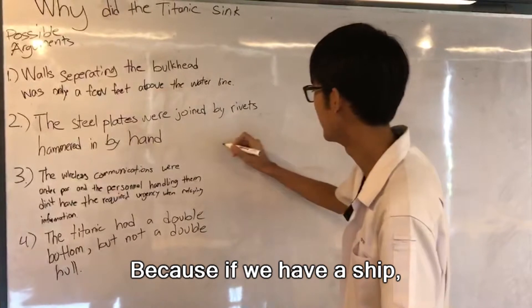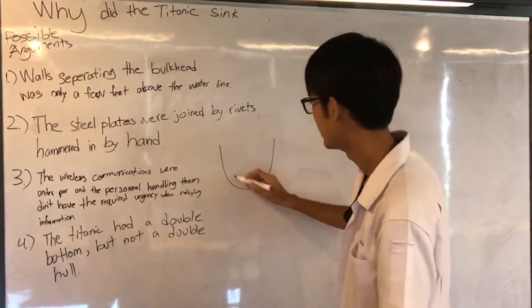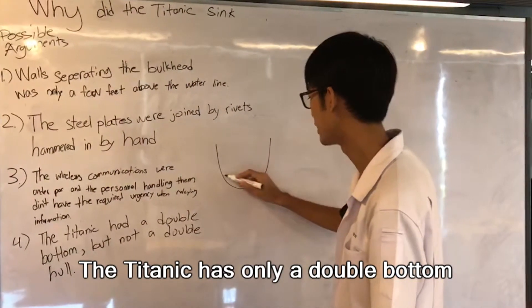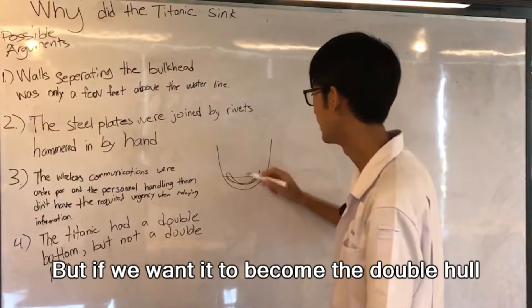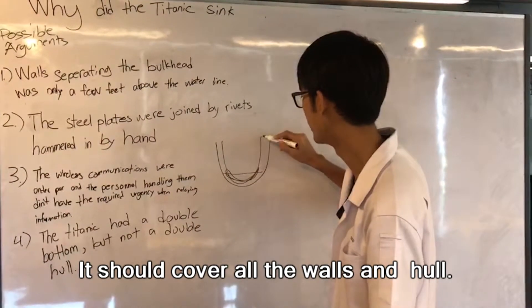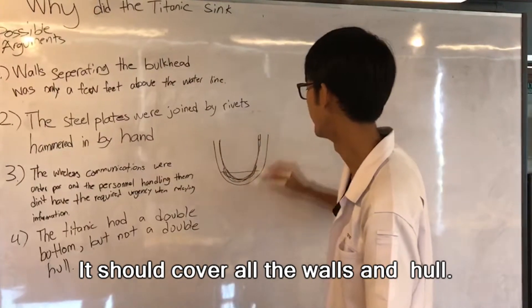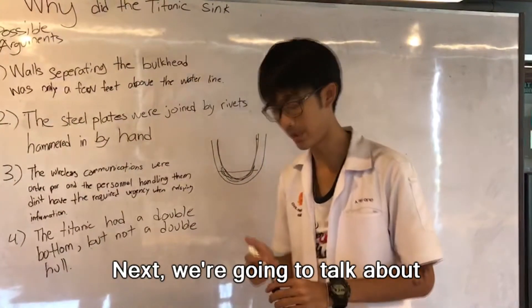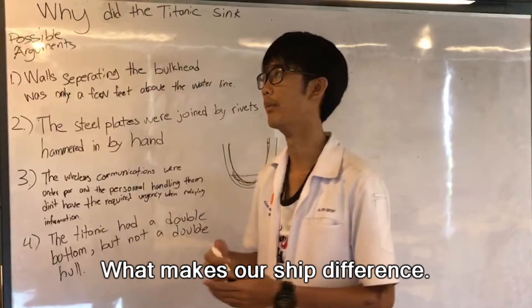Because if you have a ship, this is the front side of the ship. The Titanic has only the double bottom which is like this. But if we want it to become the double hull, it should cover all the wall and hull like this. So next we are going to talk about what made our ship different.